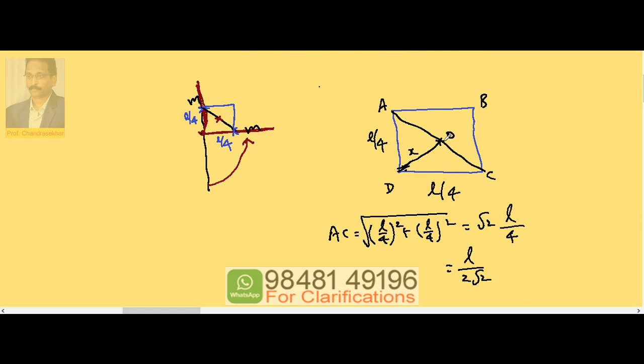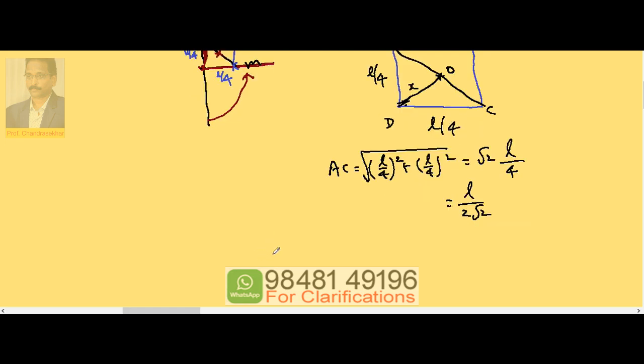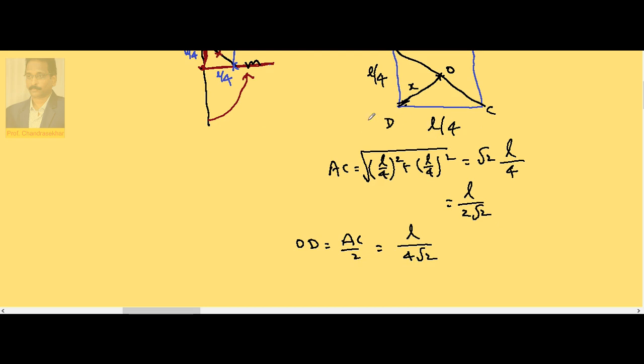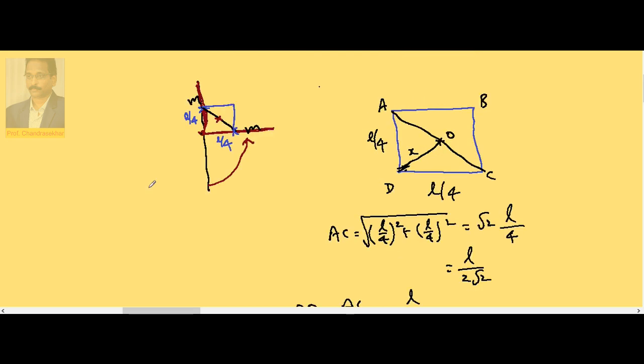Now let's say this is O. OD is nothing but half of the diagonal, so OD is equal to AC by 2, that means L by 4 root 2.